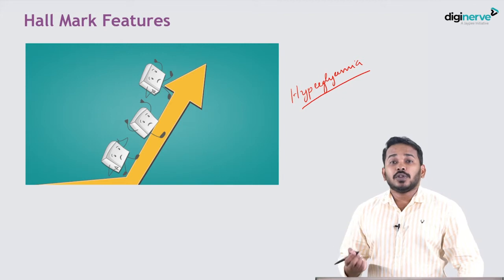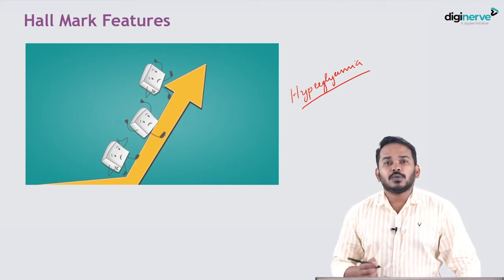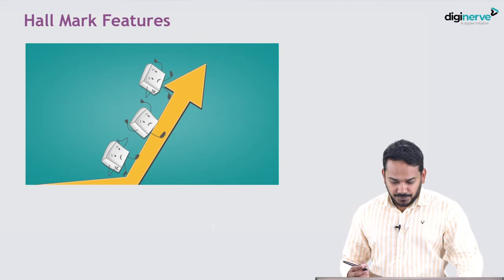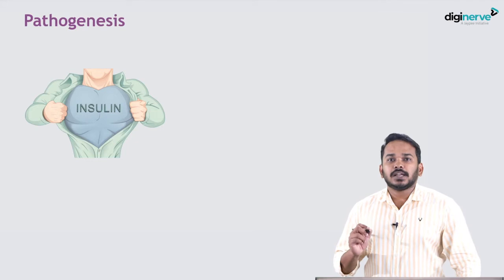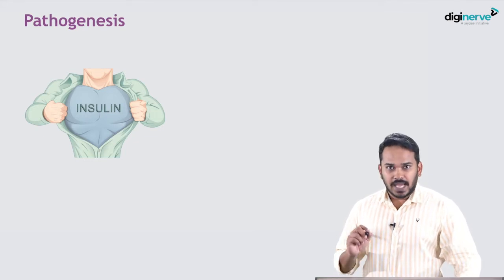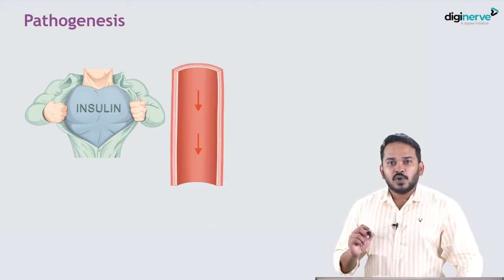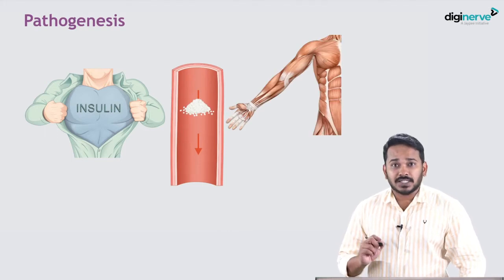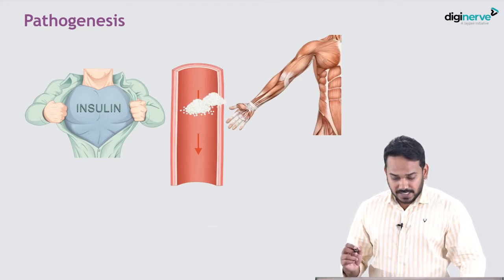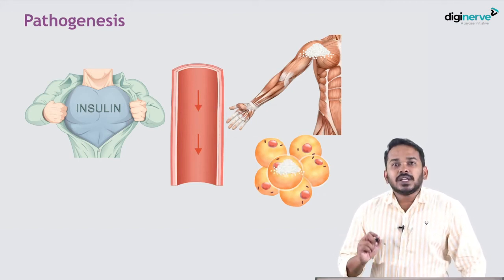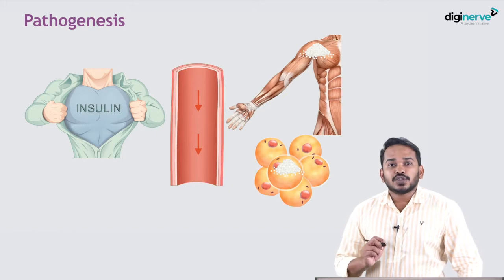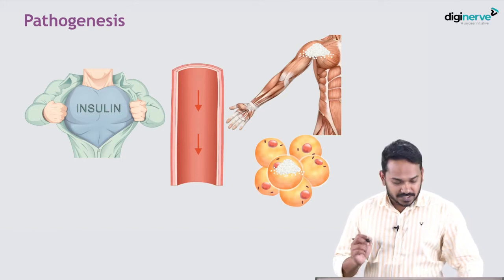Before we go into the management of diabetic ketoacidosis, we will first understand what happens in diabetes mellitus. Insulin is a hormone secreted by the beta cells of the pancreas, and it stimulates the movement of glucose from the plasma into various tissues like skeletal muscles and adipose tissue, thereby increasing the utilization of glucose present in the plasma.